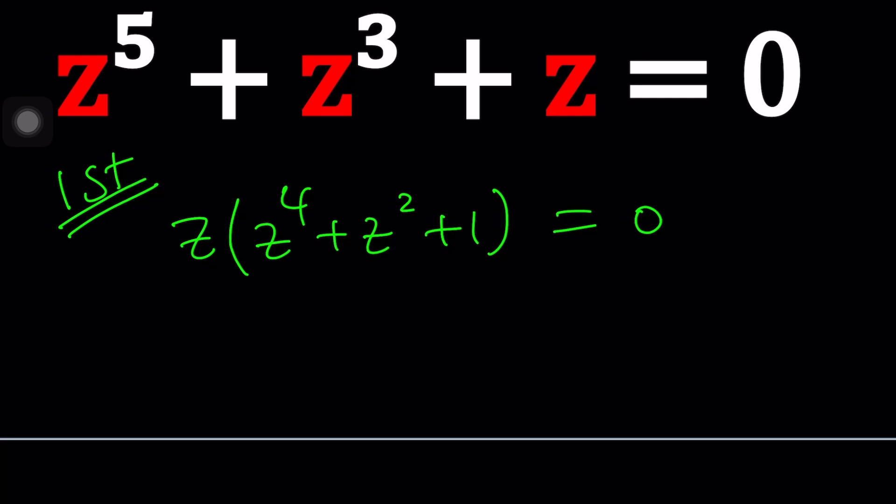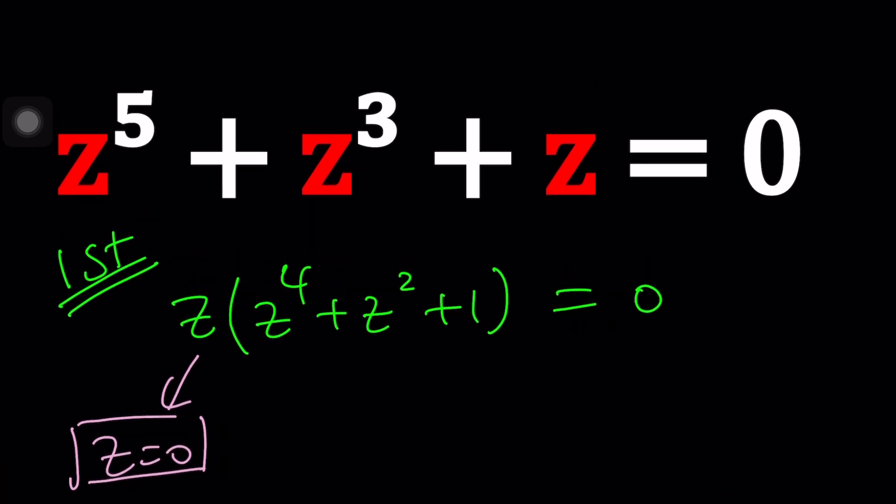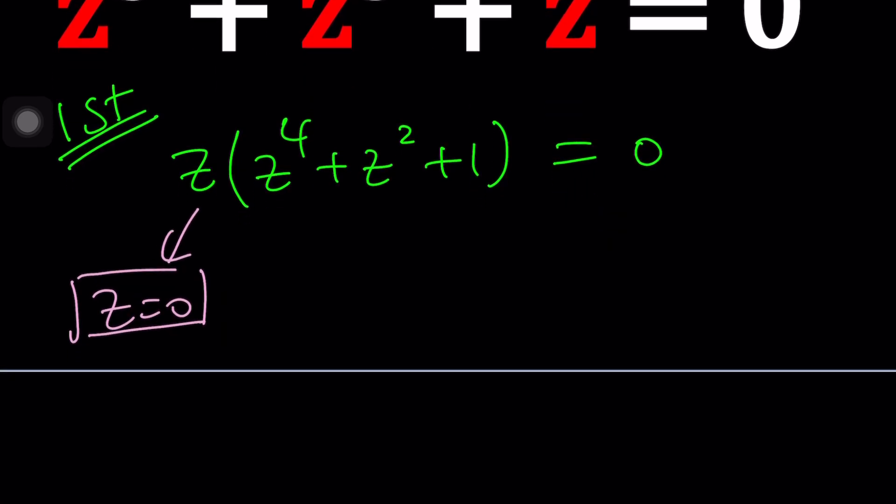But first of all, let's acknowledge a trivial solution. From here we get Z equals 0. You probably knew that because if you replace Z with 0 in the original equation, it is satisfied. But we're interested in the non-trivial ones.